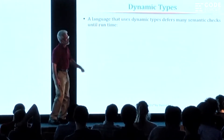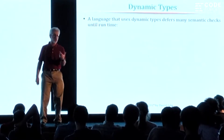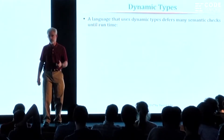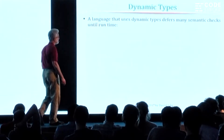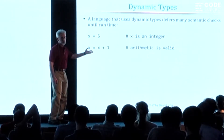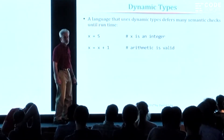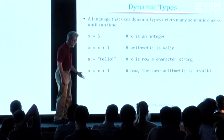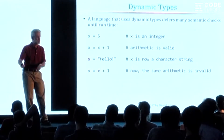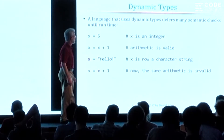What happens in languages like that is that the ability to validate a given expression cannot be done at compile time — it has to be deferred until runtime because the type information can vary depending upon the execution path. For example, there's a common everyday expression. If X has an integer value, that's valid. But if a little later you assign X a string value, a lot of programming languages would say they don't know what it means to add one to a character string 'hello'. Same expression, and its validity can't be checked until the program runs.